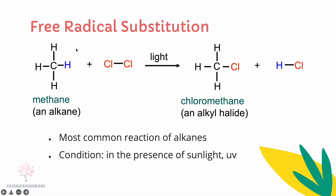Free radical substitution is the most common reaction of alkanes. For example, methane reacts with Cl2 in the presence of sunlight, UV light, or heat — this condition must be written above the reaction arrow. Without light, this reaction cannot happen. In the product, one hydrogen is replaced with one chlorine, and that chlorine is replaced with the hydrogen. That is free radical substitution for alkanes.